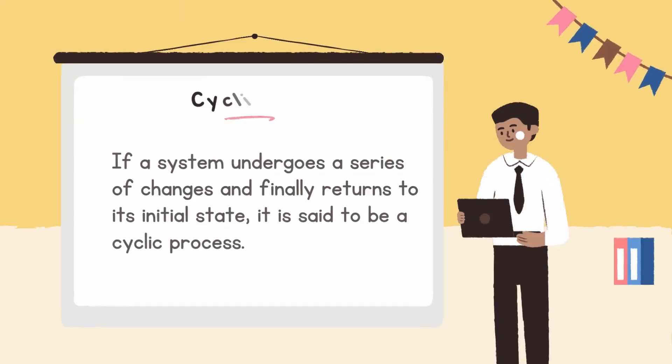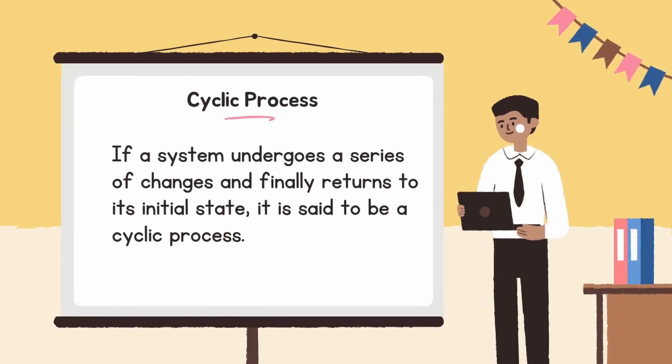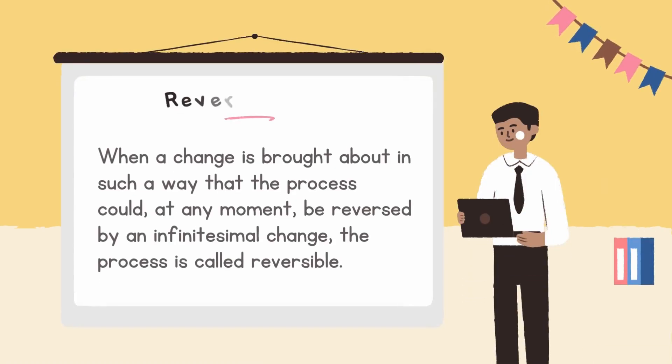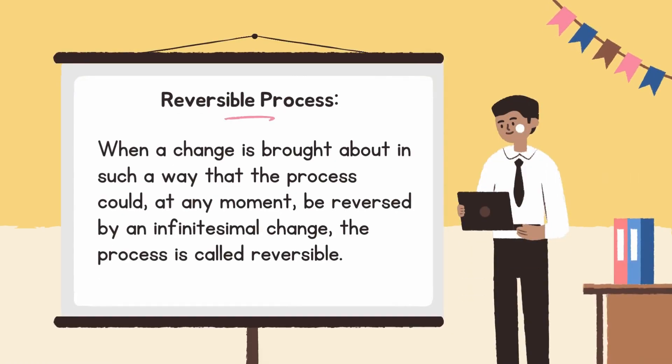Isochoric process: a process carried out at constant volume is known as an isochoric process. Next is cyclic process: if a system undergoes a series of changes and finally returns to its initial state, it is said to be a cyclic process. Reversible process: when a change is brought about in such a way that the process could at any moment be reversed by an infinitesimal change.